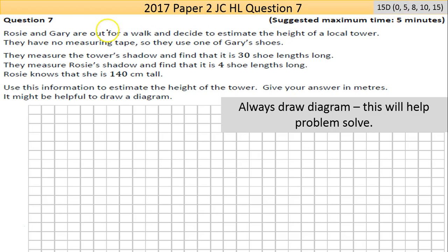So we have question 7 here, it's a 15D part, so there's a lot of marks going here for this work. Rosie and Gary are out for a walk and decide to estimate the height of a local tower. They have no measuring tape, so they use one of Gary's shoes. They measure the tower's shadow and find that it is 30 shoe lengths long. They measure Rosie's shadow and find that it is 4 shoe lengths long. They know that she is 140 centimeters tall.